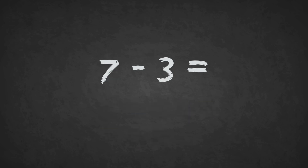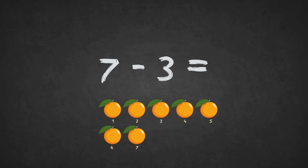7 minus 3 equals? 1, 2, 3, 4. The answer is 4.